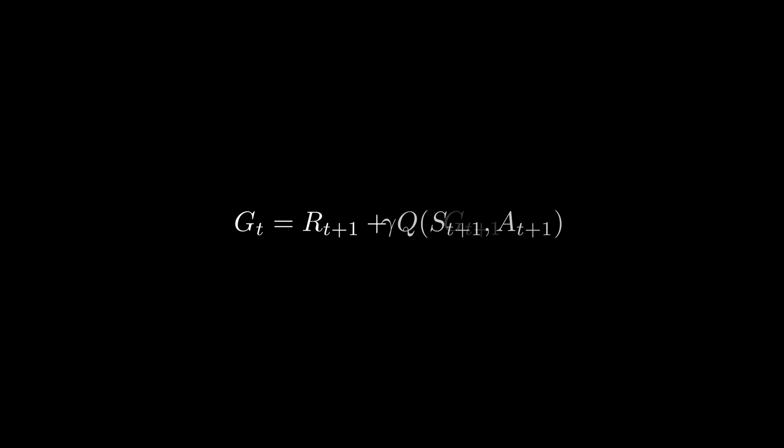This is the q value that everyone talks about. The funny looking character in front of q is called gamma. That allows us to determine how important future returns are in our calculation. Higher gamma values mean the q value has more weight, while smaller gamma values means the q value has less weight.